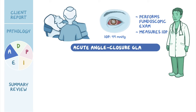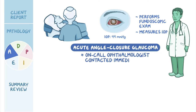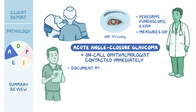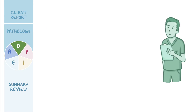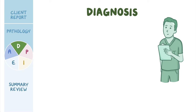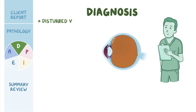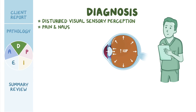Acute angle closure glaucoma is diagnosed and the on-call ophthalmologist is contacted immediately. You document your assessment findings and continue to monitor Mrs. Yao for increased pain or vision changes that indicate her condition is worsening. You then formulate your nursing diagnoses, which include disturbed visual sensory perception due to increased IOP, pain and nausea related to increased IOP, and anxiety related to change in health status.